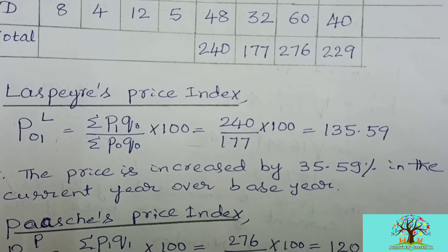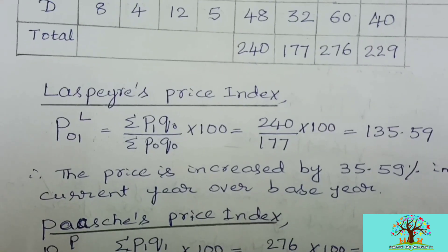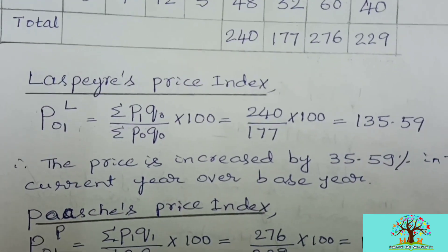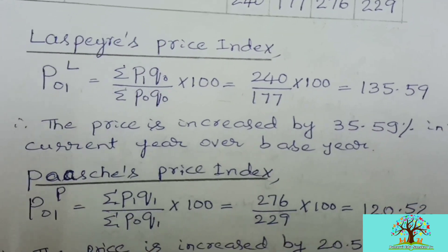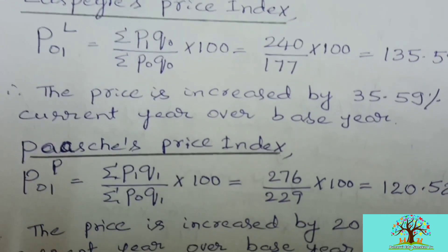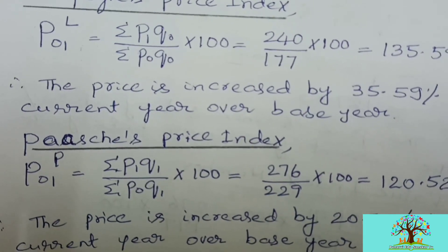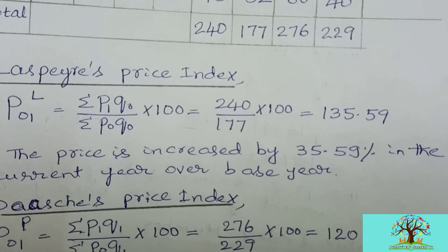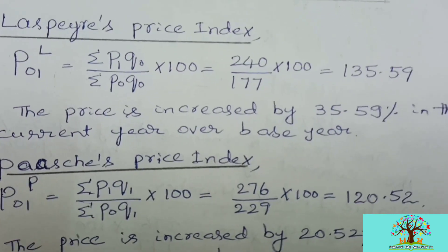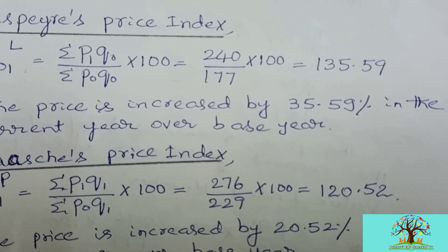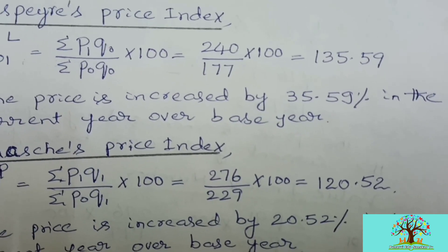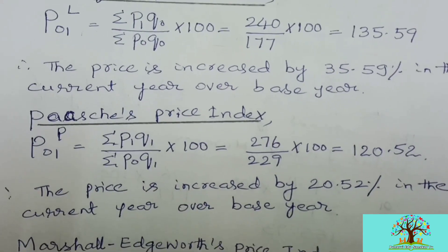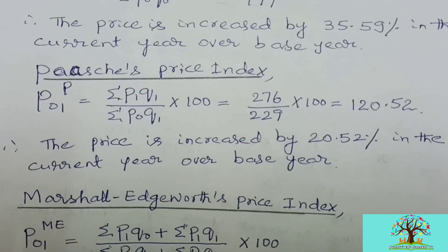Subtracting 100 gives 35.59, so the conclusion is: the price increased by 35.59 percent in the current year over the base year. Next is Paasche's price index number: P01(P) = summation p1·q1 divided by summation p-naught·q1, multiplied by 100. The values are 276 divided by 229, multiplied by 100, giving 120.52. Subtracting 100 gives 20.52 percent increase. Conclusion: the price increased by 20.52 percent in the current year over the base year.